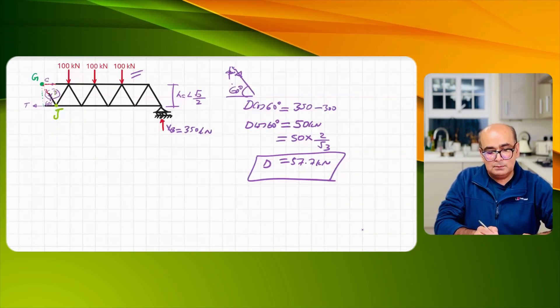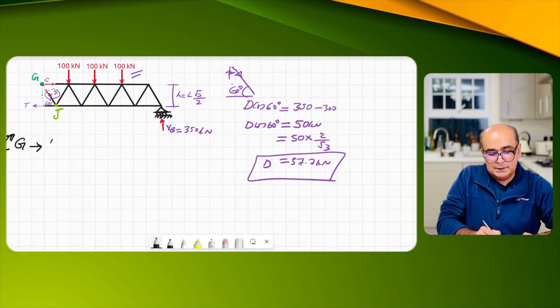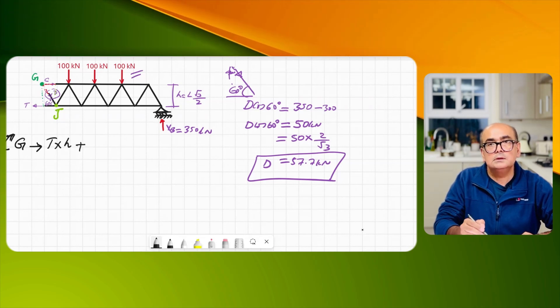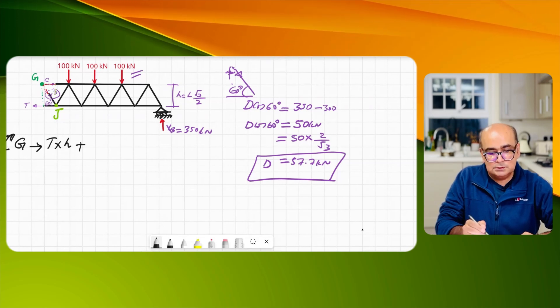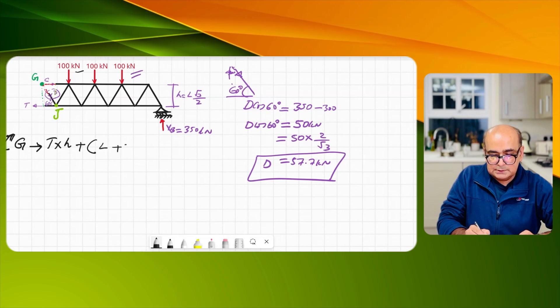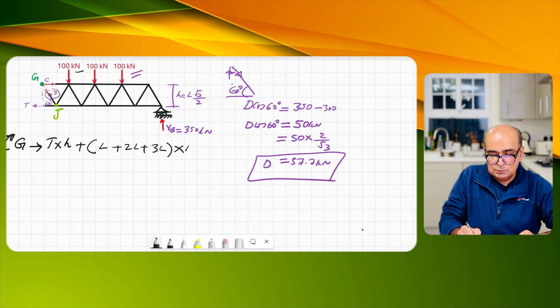Let me first of all take moment at G. Taking moment at G it will be T times h plus these point loads they will create moment as well with the first one will be L plus 2L plus 3L into 100.